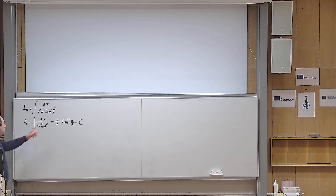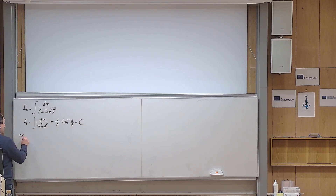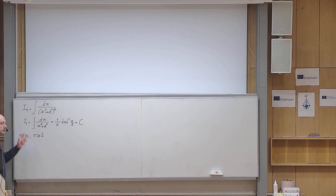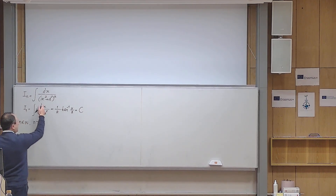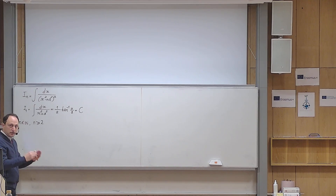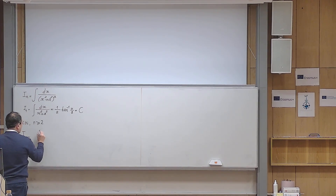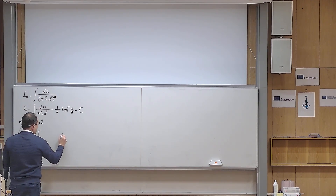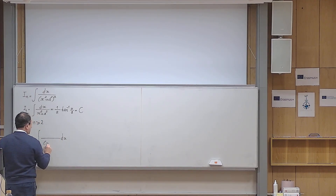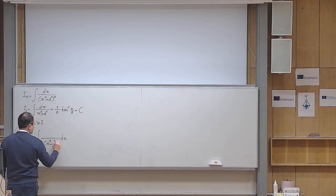The problem becomes harder if I increase this power. So let us say n is a natural number greater than or equal to 2, since I already solved the problem for I sub 1. I would write I_n as equal to this integral with dx in the numerator, and x squared plus a squared to the power of n in the denominator.